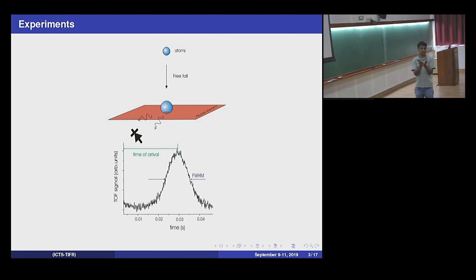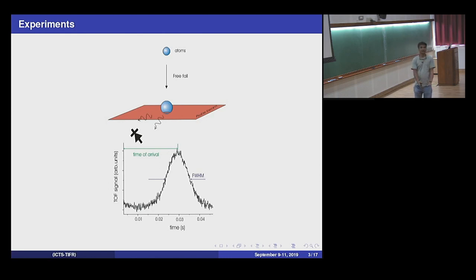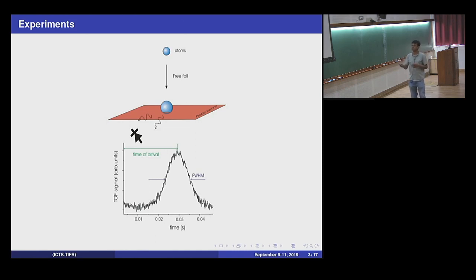There are real experiments which precisely look at this sort of question. For example, you take a cold atom system trapped in some potential — so it's localized in space — and then you release the trap and the wave function starts evolving. The atoms fall under gravity and you have a detector, in this case a sheet of light. When the atom arrives on this sheet, you can detect its arrival and measure something called time of flight — the probability that it arrives at a certain time. From this distribution, you can say something about the state of the initial wave function.